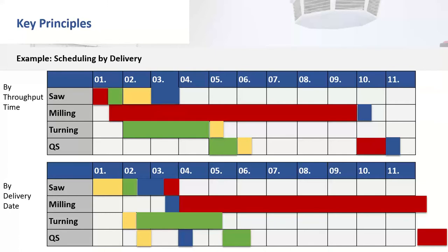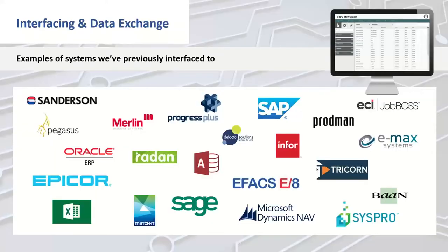We're going to move on and talk about interfacing to third-party systems — typically ERP systems, though not exclusively. The majority, around 85% to 90% or higher, of our integrations are to an ERP system, because that's where works orders, operations, and standard times are held. We don't want to re-enter that data, so we have a flexible piece of middleware software that sits between the scheduler and the ERP system. Don't worry if your ERP system isn't shown on the slide — this is just examples of some we've integrated to, and we've yet to find a system we're unable to integrate to.